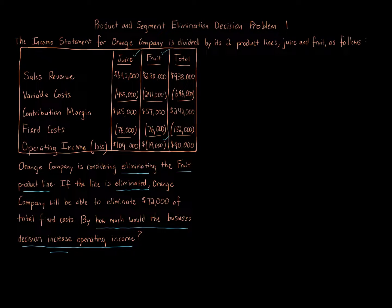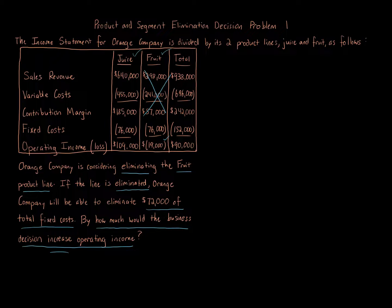We're told that if the line is eliminated, Orange Company will be able to eliminate $72,000 of total fixed costs. The contribution margin from fruit would be completely gone — you would not get that amount, since that's a variable element tied to the fruit revenue. Fixed costs of a specific segment often linger and get absorbed by the other product, but here we're told we save $72,000.